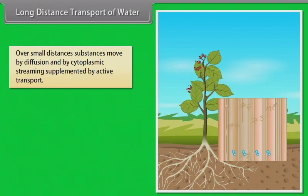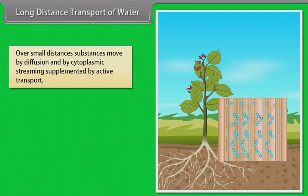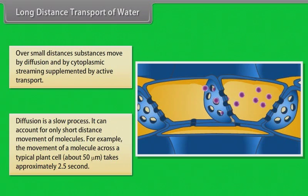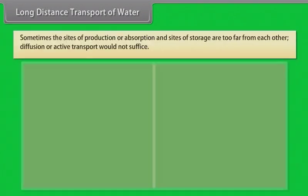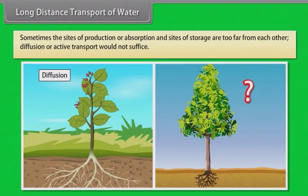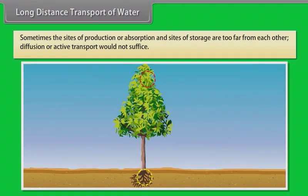Long distance transport of water. As we all know, over small distances, substances move by diffusion and by cytoplasmic streaming, supplemented by active transport. Long distance transport of substances within a plant cannot be by diffusion alone. Diffusion is a slow process and can account for only short distance movement of molecules. For example, the movement of a molecule across a typical plant cell takes approximately 2.5 seconds. Some trees are up to 50 feet tall, so think how many years it would take for movement of molecules over a distance of 25 to 30 feet by diffusion alone. Sometimes the sites of production or absorption and sites of storage are too far from each other, so diffusion or active transport would not suffice.